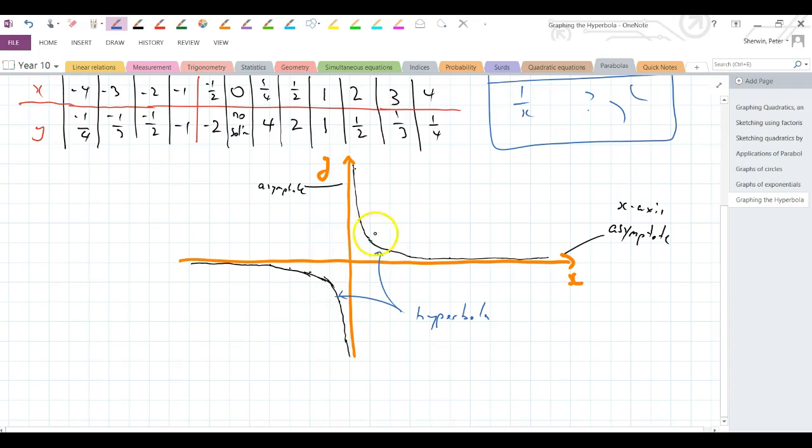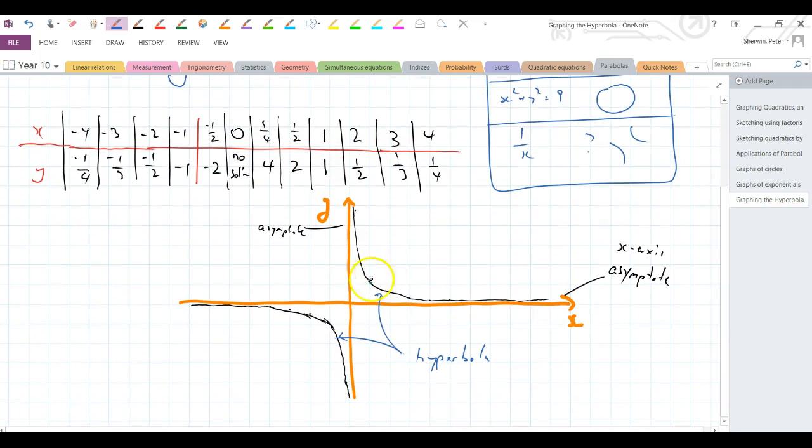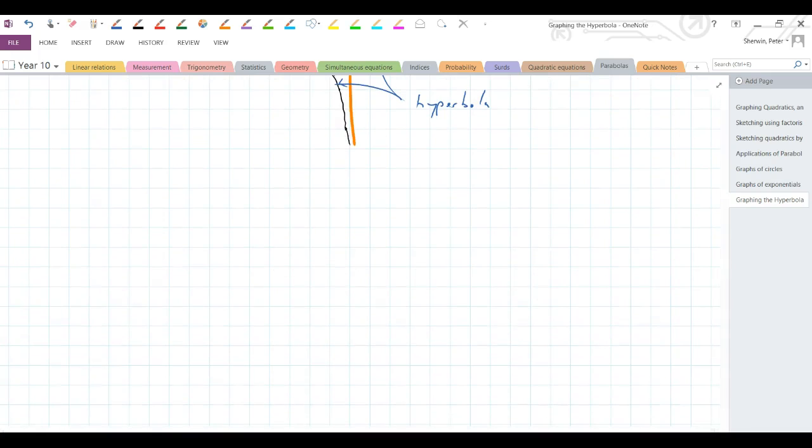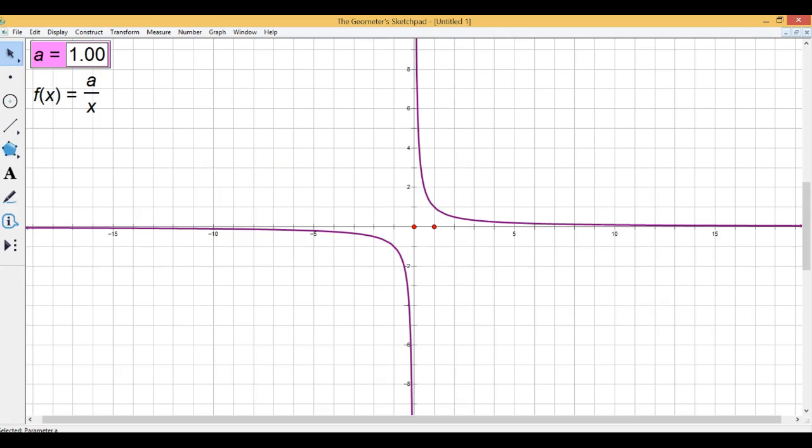Okay, so there's my graph of 1 on x, and the real features of it are these asymptotes. So if we go in to, I'll just pause for a second. Okay, so what we've got on the screen now is the graph, the hyperbola, 1 over x. Just have a look up here, left of the screen. I've got my function of x equals a over x. a is set at 1 at the moment, so this is currently 1 over x.